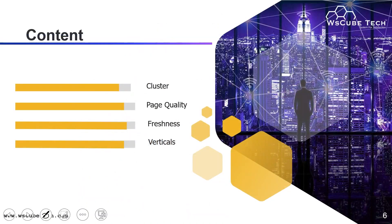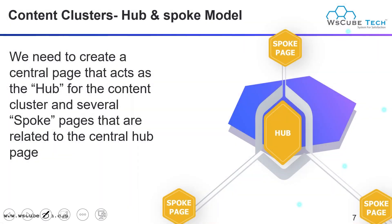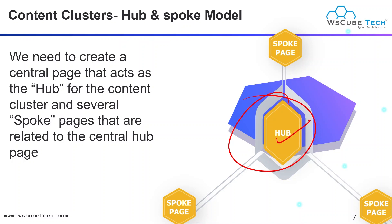Let's start with content. In case of content, we have content clusters, page quality, freshness, and verticals. What is a content cluster? Content clusters mean that you have a central idea — that is your hub — and then you have spoke pages attached to your hub. This particular model is known as the hub-spoke model.